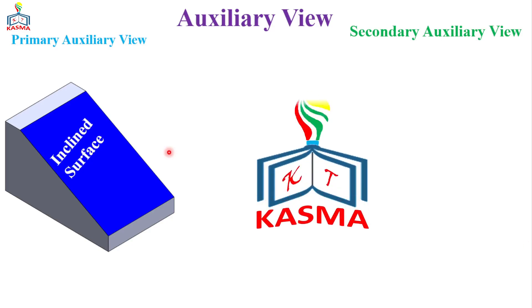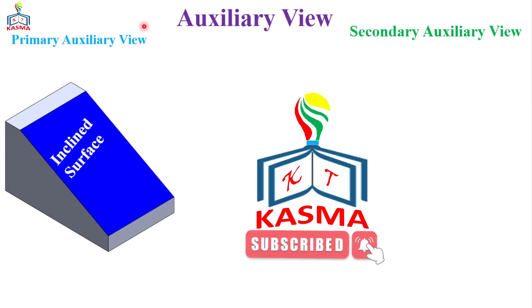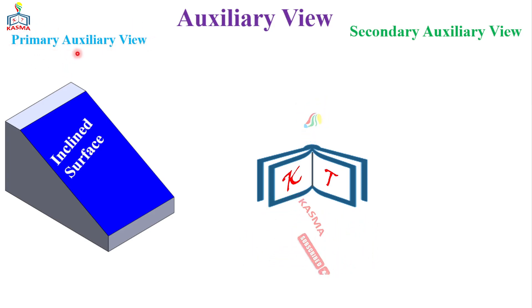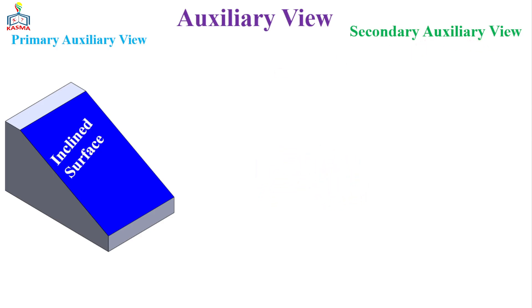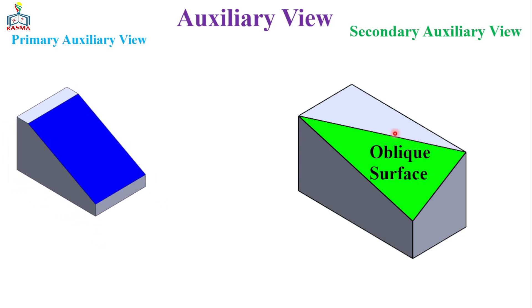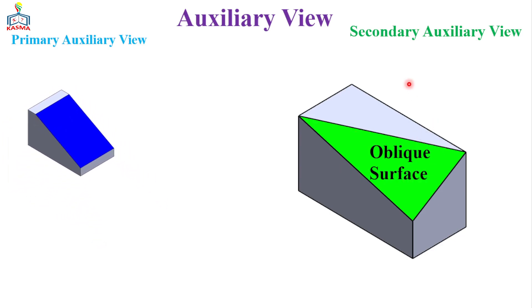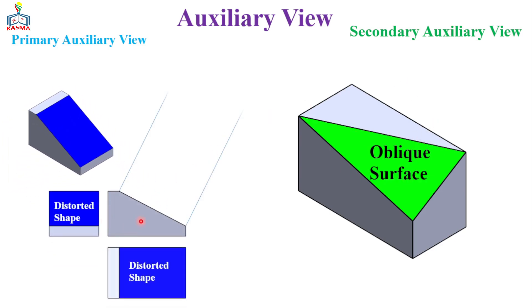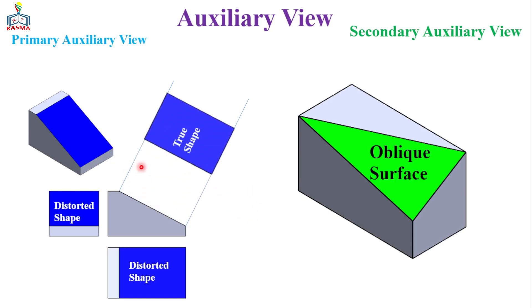This video mainly focuses on the primary auxiliary view. Normally we'll have a primary and a secondary auxiliary view. The type depends on the given surface: if the surface is an inclined surface, we can use the primary auxiliary view, and if the surface is an oblique surface, we can use the secondary auxiliary view. If you want to know more about inclined surfaces, you might refer to the video related to the projections of the surface.